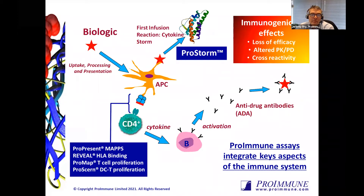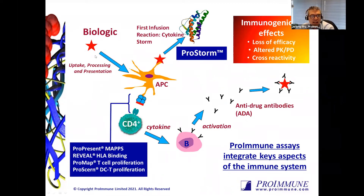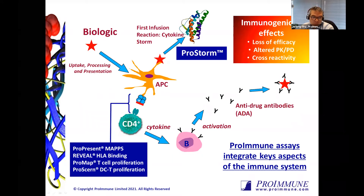This cartoon simplifies some of the key pathways driving unwanted immunogenicity. If we think about a biologic, this molecule is given to a patient and is taken up, processed, and presented by cells of the immune system, such as antigen-presenting cells — these can be macrophages, dendritic cells, B cells. These antigen-presenting cells will be presenting peptides derived from the biologic in the context of MHC class 2. This is exogenous proteins through a classical class 2 presenting pathway.